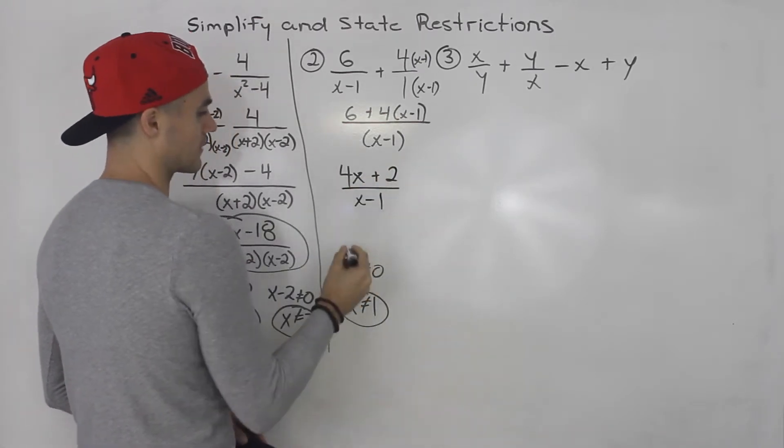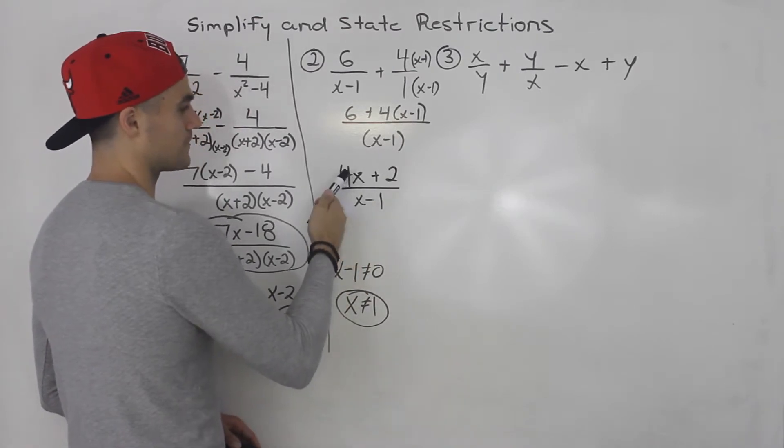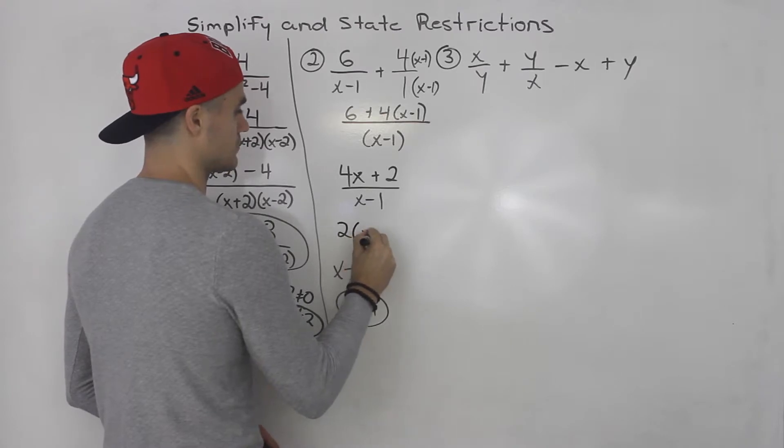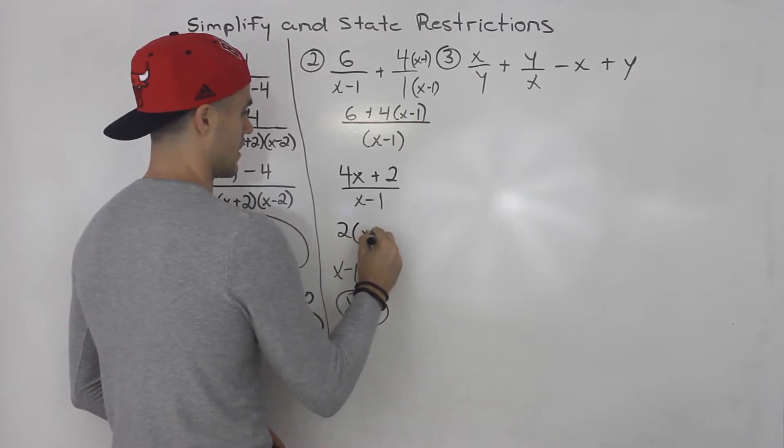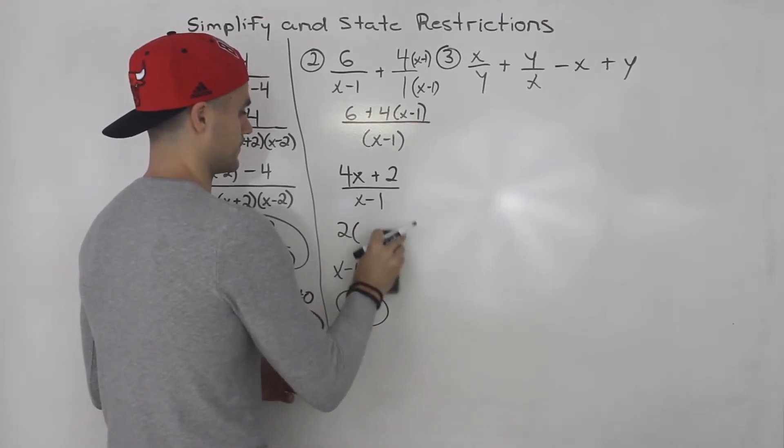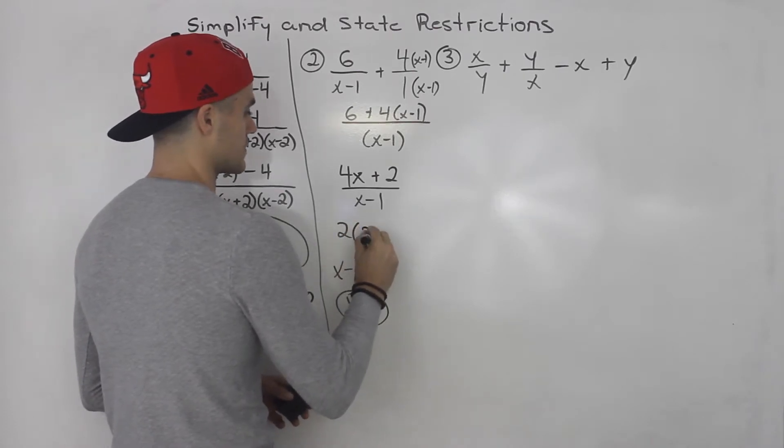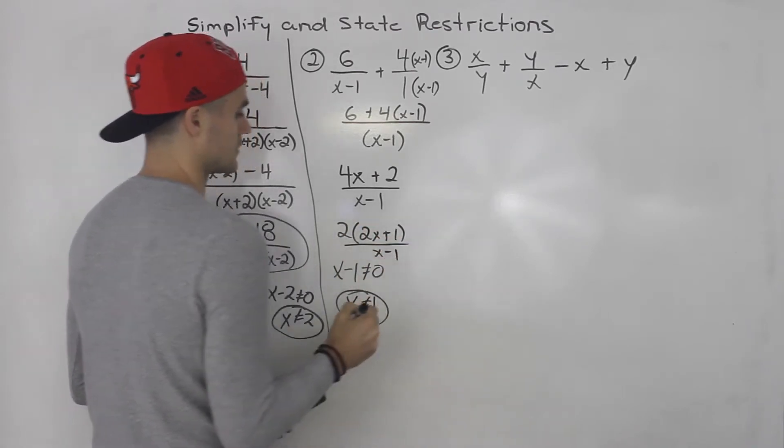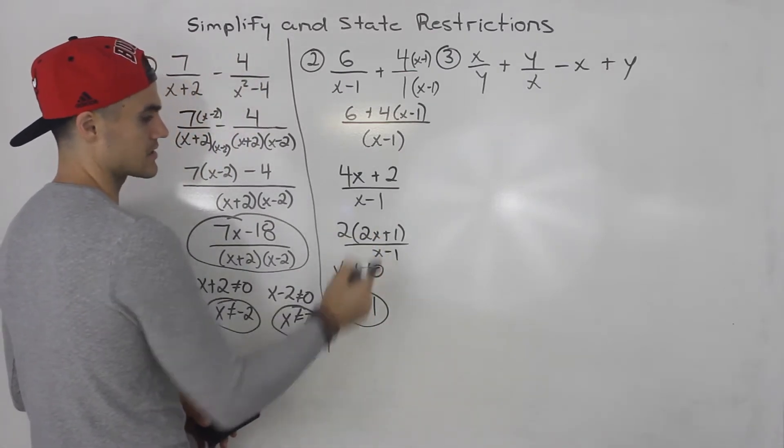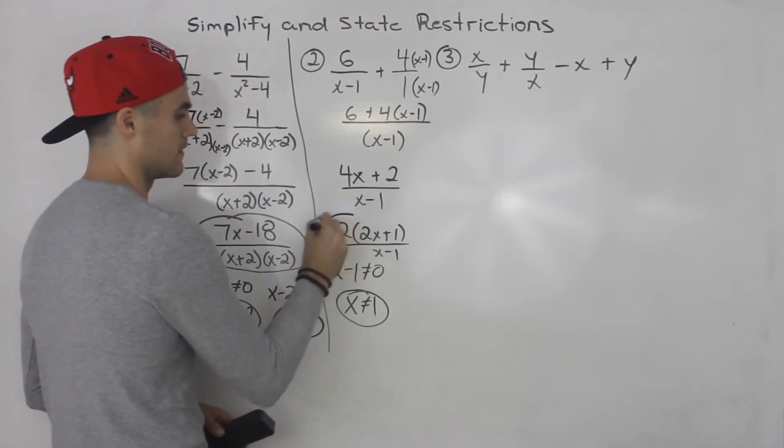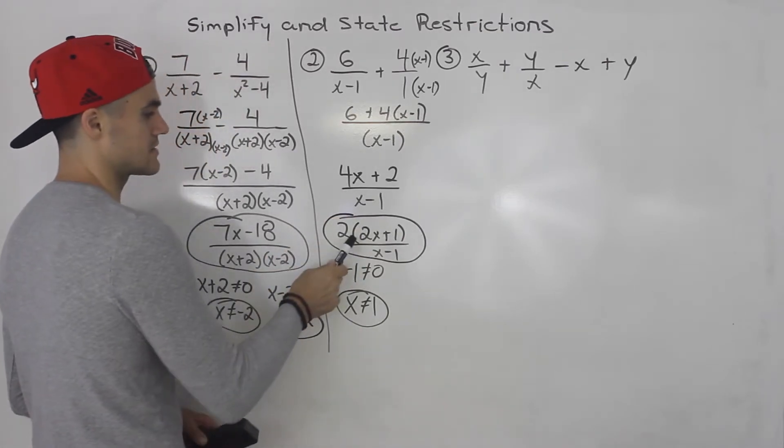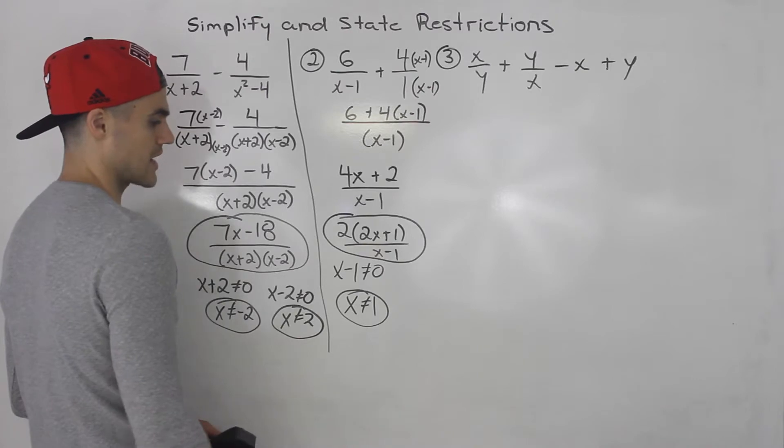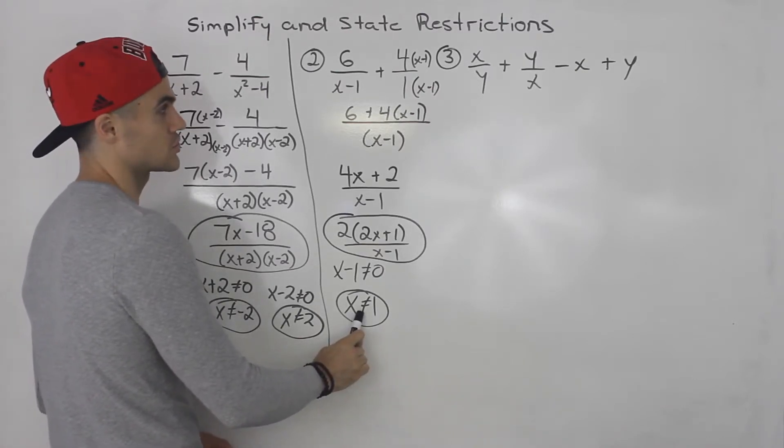And then you want to factor the simplified numerator always. Make sure that nothing can simplify further. We could take out a 2, so 2 times 2x plus 1 all over x minus 1. It doesn't seem like anything will cancel out or simplify any further. So that there is the simplified answer for those two rational expressions added together. That's the restriction.